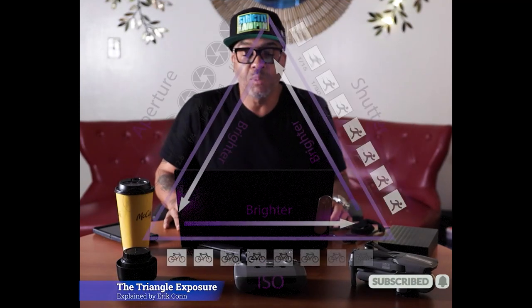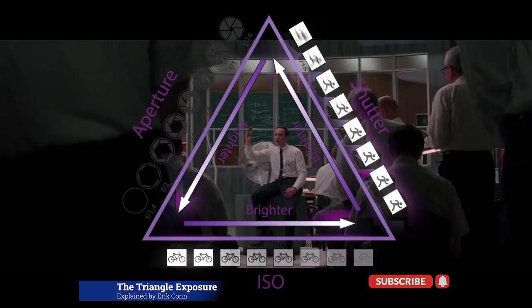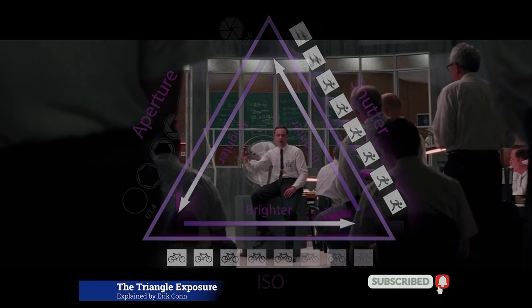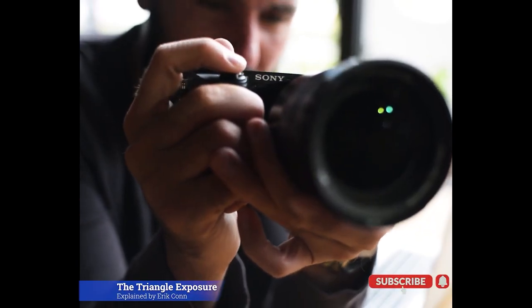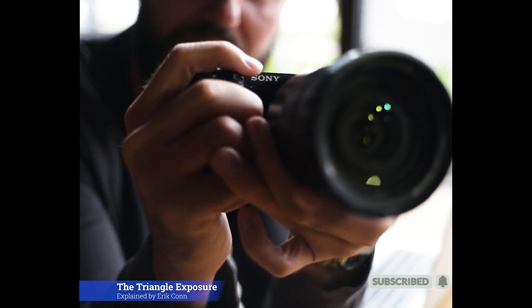Today we're going to be talking about the triangle exposure — essentially a triangle: earth, sub-orbit, earth. Three pieces, three steps. Every beginner photographer, cinematographer, videographer should know.